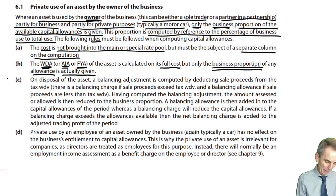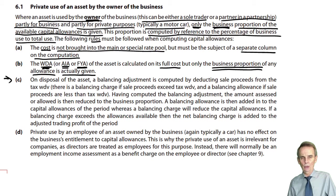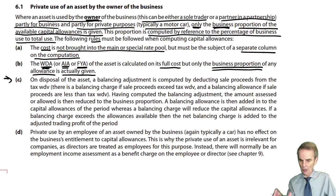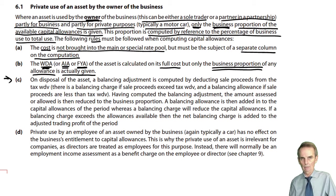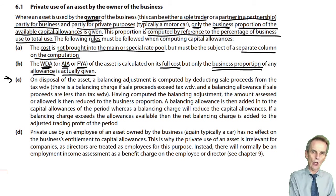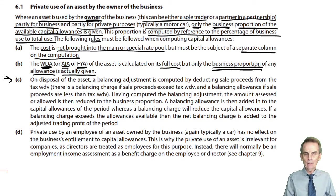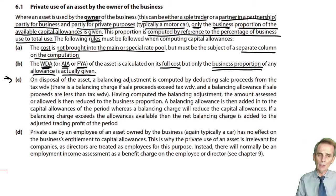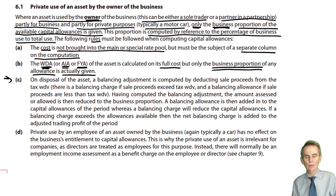Back in note 6.1 part C, we now see what happens on disposal. Because this is a non-pool asset — sometimes referred to as a single asset pool — when it is sold, it must be cleared out of the capital allowances computation; it's not going to continue on. It's not like where you have balances on a pool that live on even after all contents have been disposed of. Here with the non-pool asset, when it is sold, what is referred to as a balancing adjustment must be established to ensure that over the period of ownership we've collected the correct amount of capital allowances.